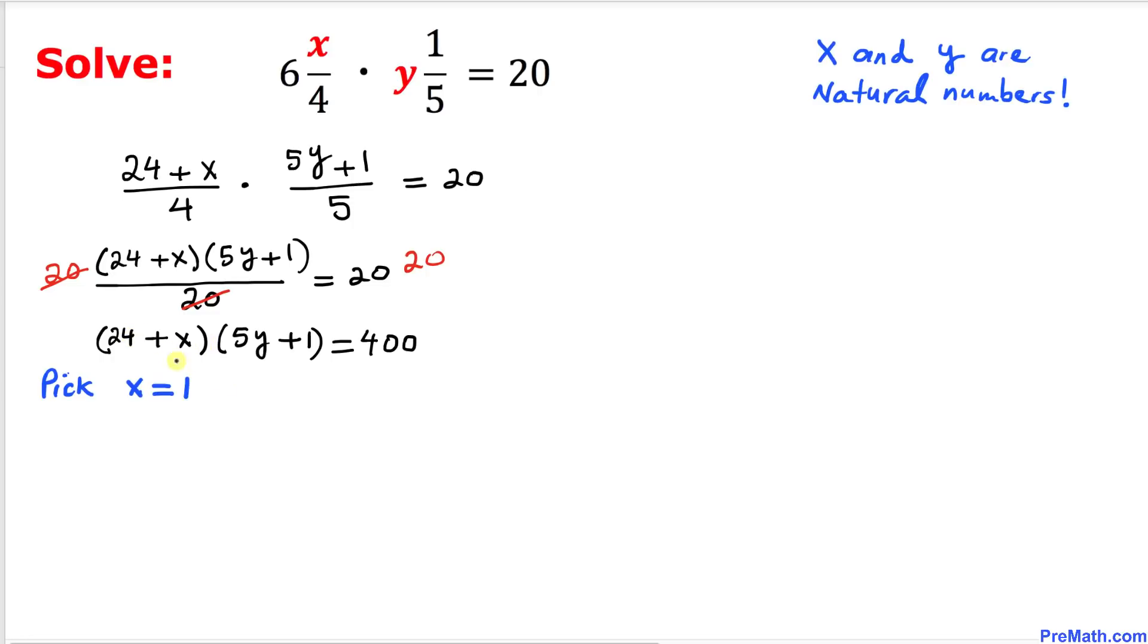So that's going to give us 24 plus 1, times 5y plus 1, equals to 400. Now we can see 24 plus 1 makes 25, times 5y plus 1, equals to 400. Let's go ahead and divide both sides by 25.